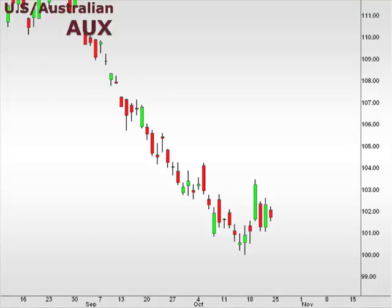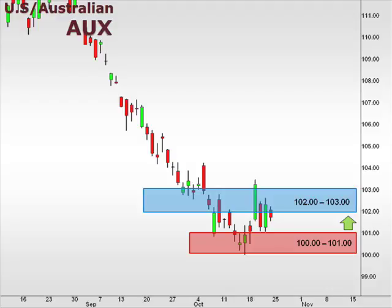While the U.S. dollar is attempting to find support above the 100-101 focal zone after spending close to two months in a free fall against the Australian dollar, we may be seeing signs of a reversal pattern. The 102-103 focal zone remains an important resistance level for the AUX. A break beyond 102.5 lends credibility to a move towards 105.